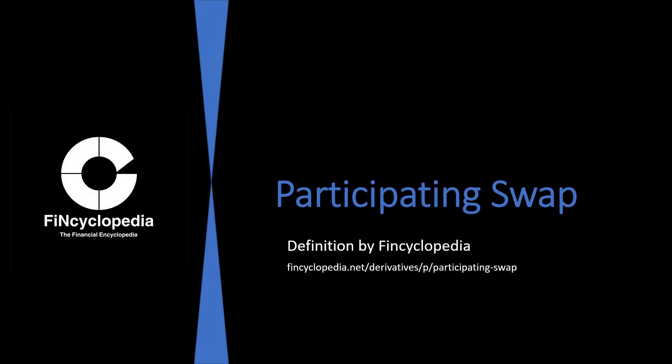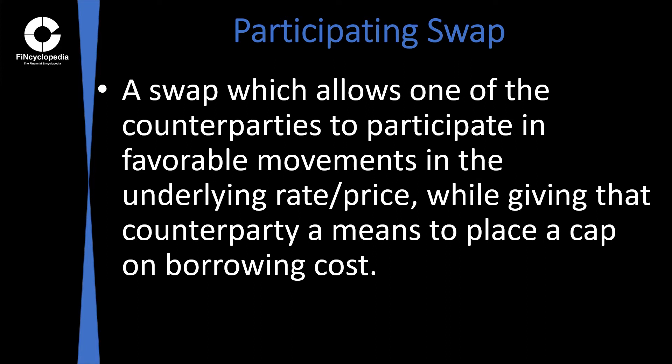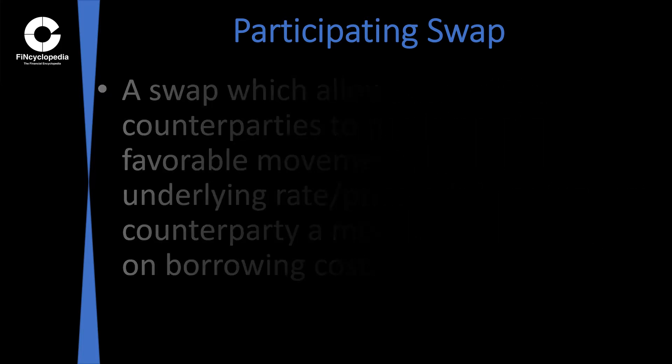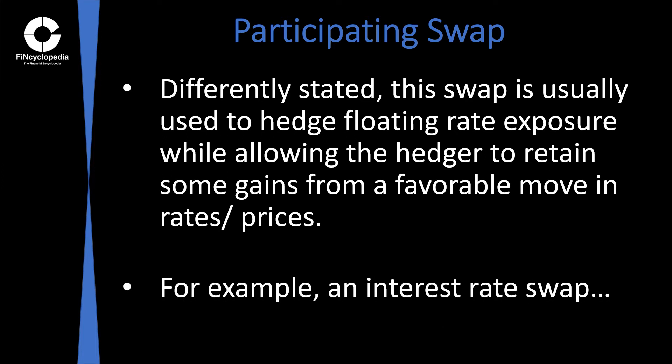Participating swap — a definition brought to you by Fincyclopedia, the financial encyclopedia. In derivatives, a participating swap is a swap which allows one of the counterparties to participate in favorable movements in the underlying price or rate, while giving that counterparty means to place a cap on borrowing cost. This swap is usually used to hedge floating rate exposure while allowing the hedger to retain some gains from a favorable move in rates or prices.